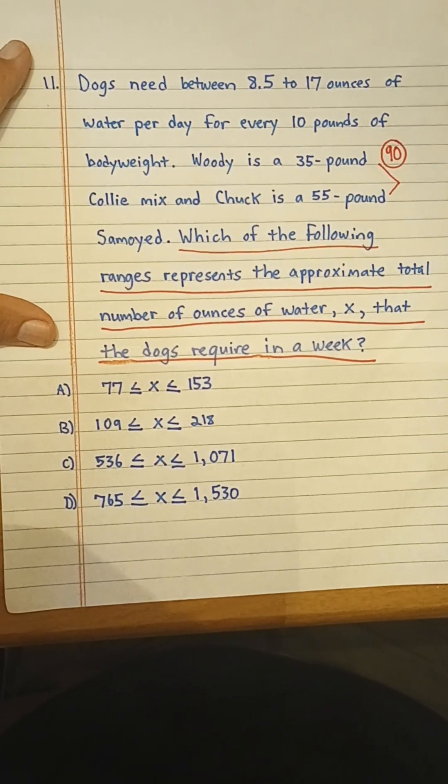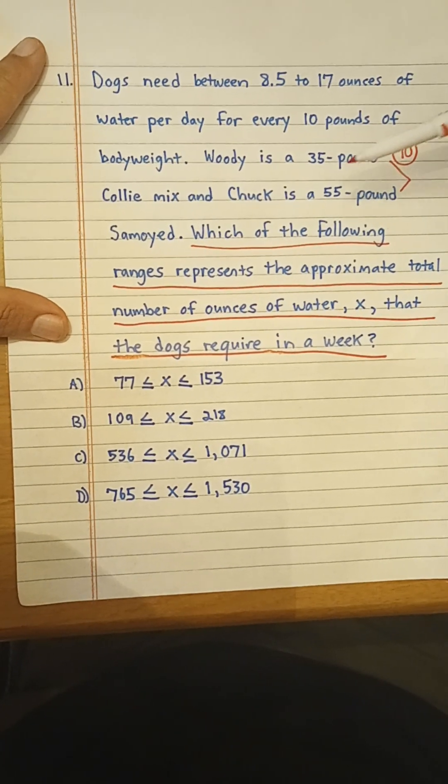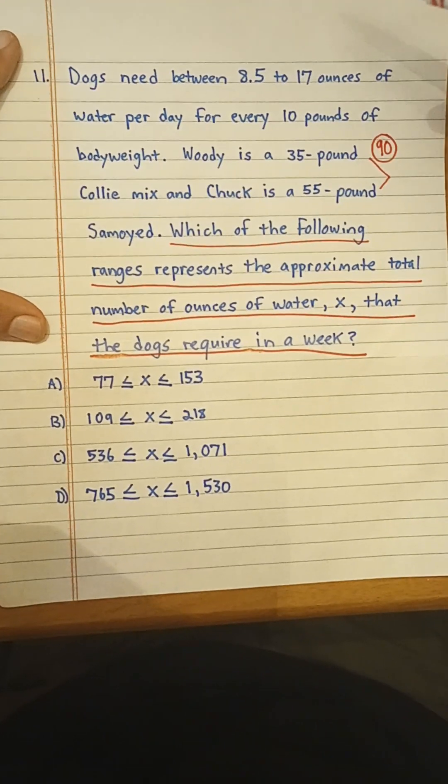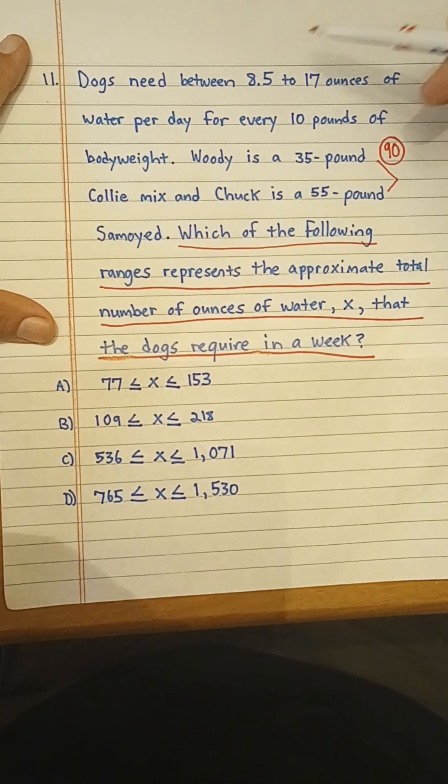So we could actually find just the lower range for the two dogs, and from there we could select the answer. We don't need the full range. Okay, so let's set up a proportion for the lower range.